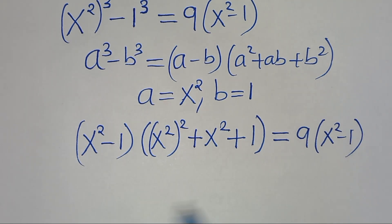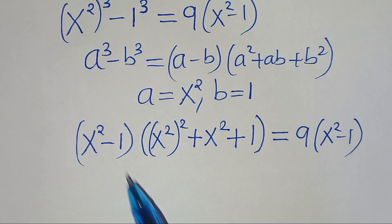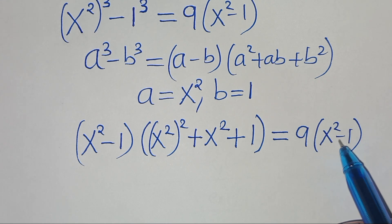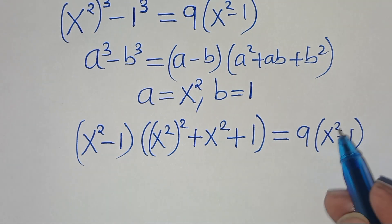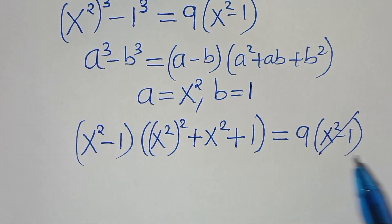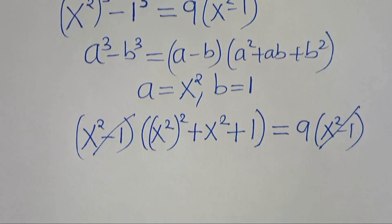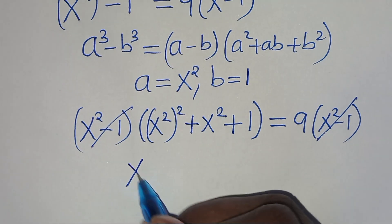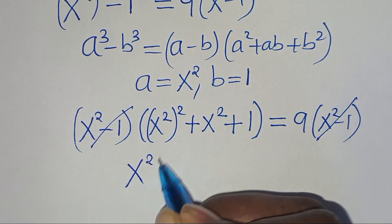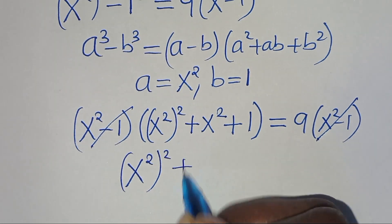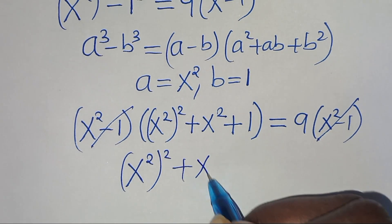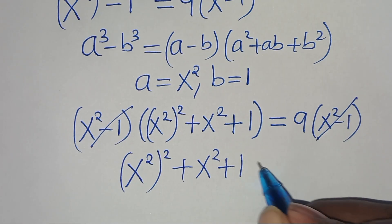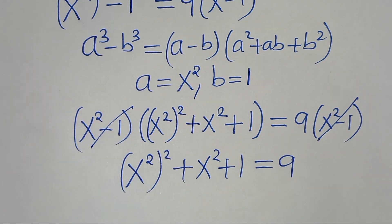So here we have x squared minus 1, so we can simplify this, so that now we have x to the power of 2 raised to the power of 2, then plus x to the power of 2, plus 1, this is equal to 9.